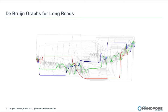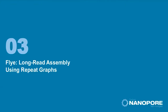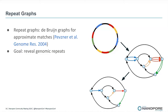To overcome this, in our Flye assembler we proposed to use repeat graphs instead of de Bruijn graphs. You can view repeat graphs as a generalization of de Bruijn graphs. The idea remains the same: we want a graph that collapses repeats into the same paths and reveals genomic repeats. But we want these graphs to tolerate errors in long reads — so we want approximate matches instead of exact matches.